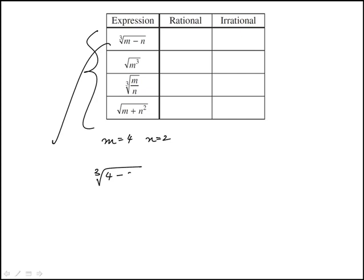Cube root of 4 minus 2, that is cube root of 2, that's going to be irrational.